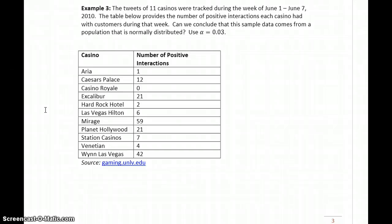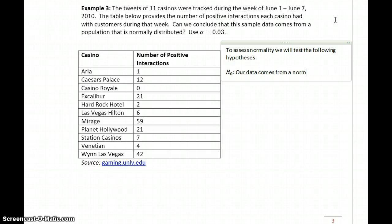Can we conclude that this sample comes from a population that's normally distributed? To assess normality, we'll test the following hypotheses. The null hypothesis: our data comes from a normal population. The alternative hypothesis: our data comes from a non-normal population.